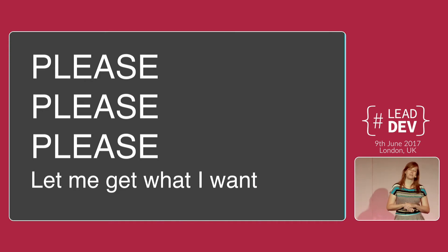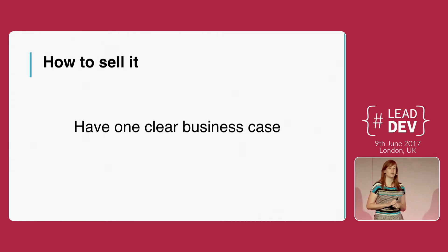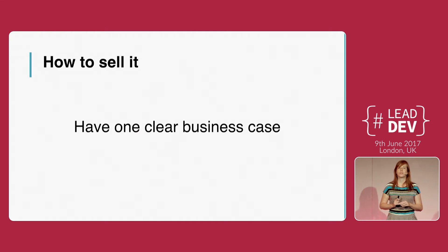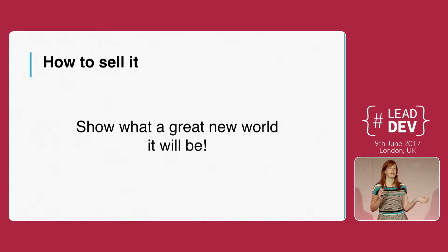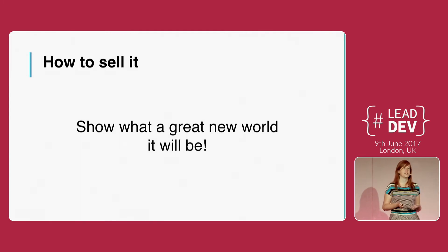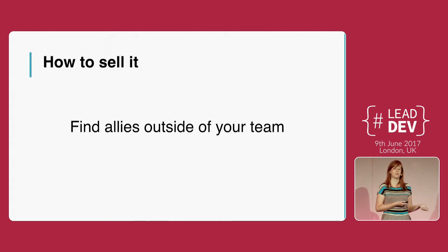Now you know what value this project will bring. How can you get the business on board? How can you sell this to whoever in your company decides how you're spending your time and money? First, have one clear business case — it makes sense outside of the technology team. Having one clear goal will help you prioritize and decide what to work on first. Create excitement about what the new world will look like — this is about what you'll be able to do once this work is done. Make it about the transformation that will happen to your organization once this is finished.